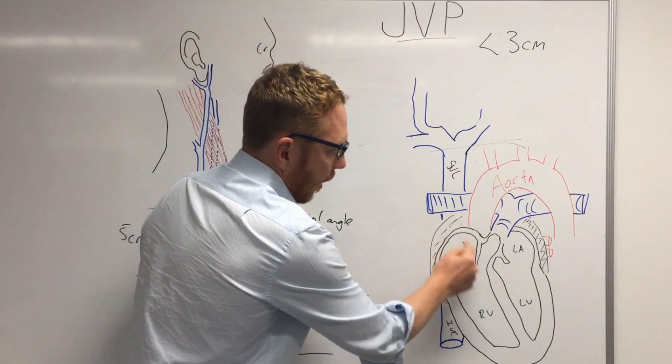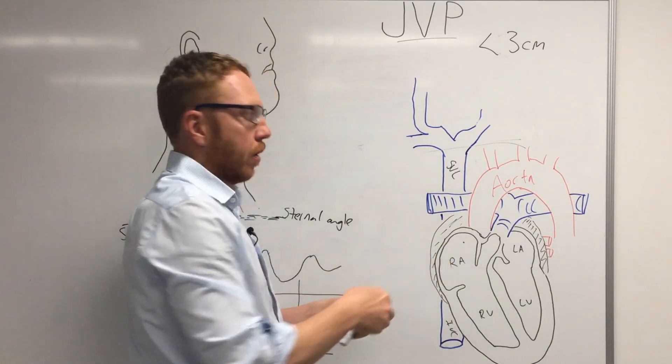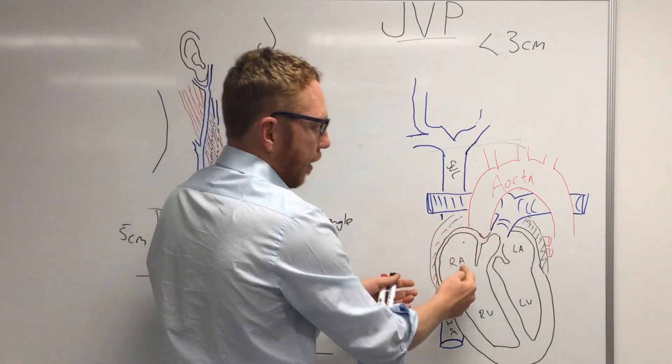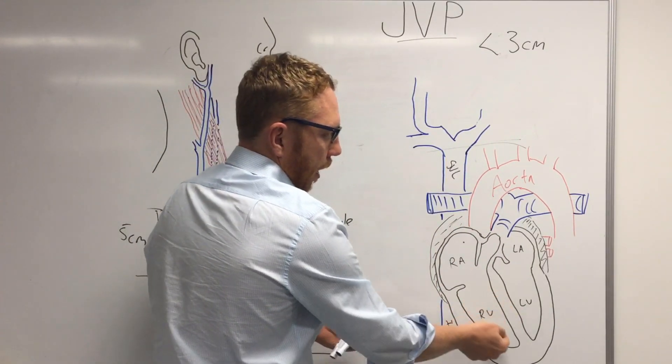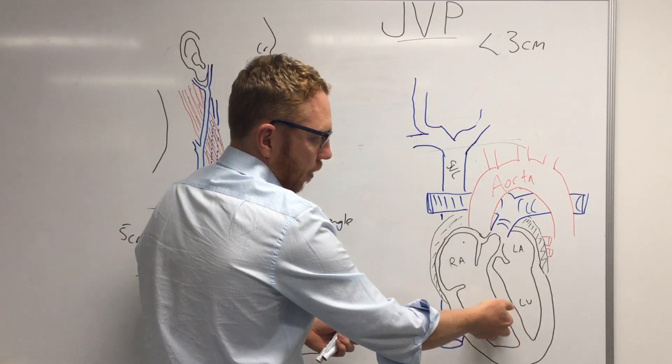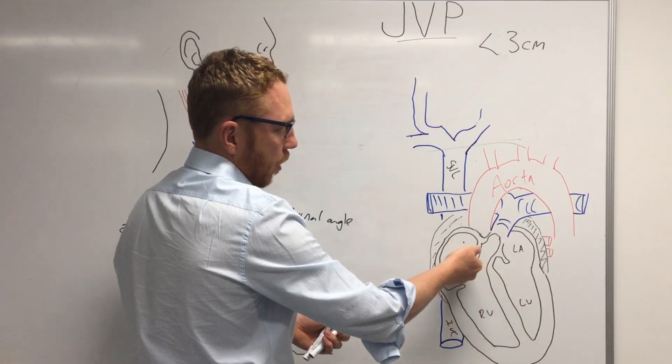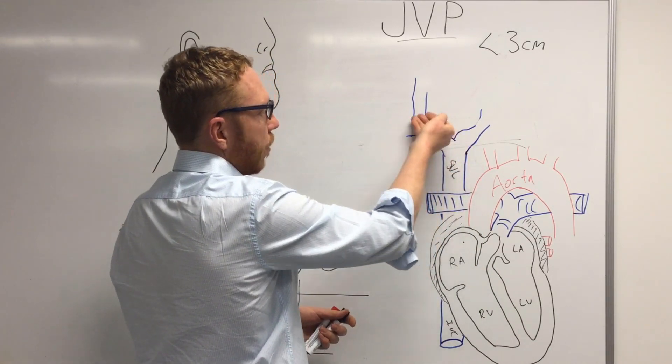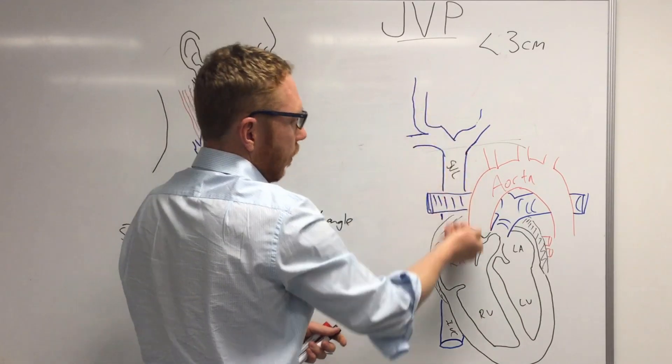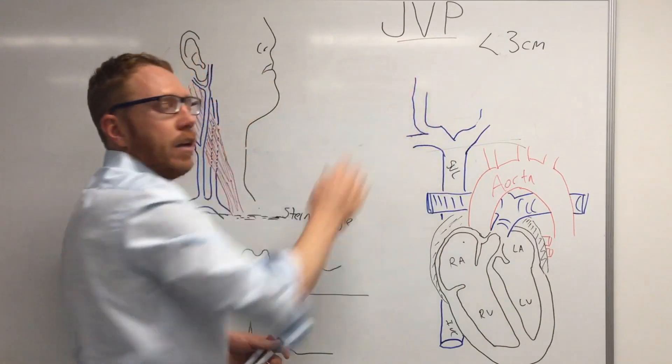So if you look at the right atria when it's emptying its blood down into the right ventricle, so the right ventricle is in diastole, it gives an indication of this big column of blood that is continuous all the way up, SVC, all the way up to the internal jugular. So this gives you an indication, the jugular venous pressure, of not only the pressure in the internal jugular but also the superior vena cava.